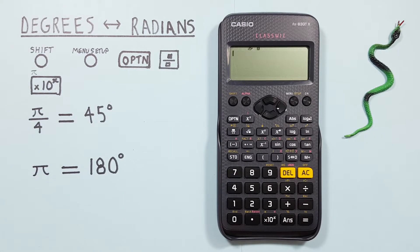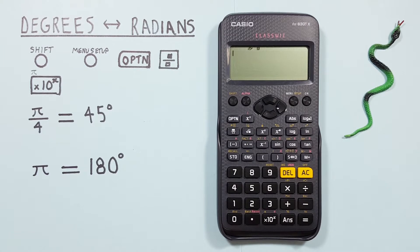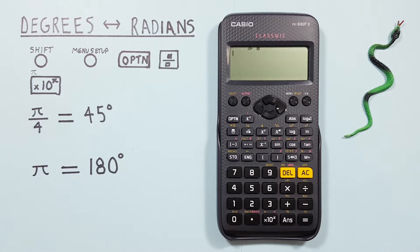Hello and welcome to HD Calcs. I'm Rick and in this video we're going to have a look at how we can convert between degrees and radians on the Casio FX 83 GTX ClassWiz Calculator.